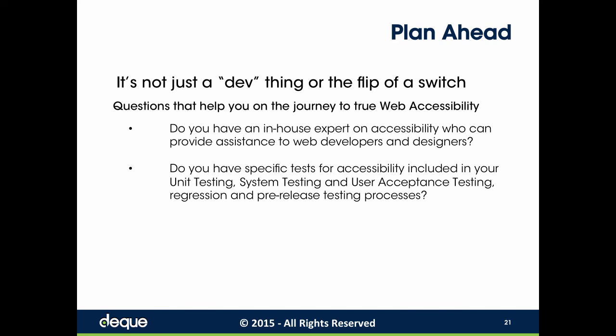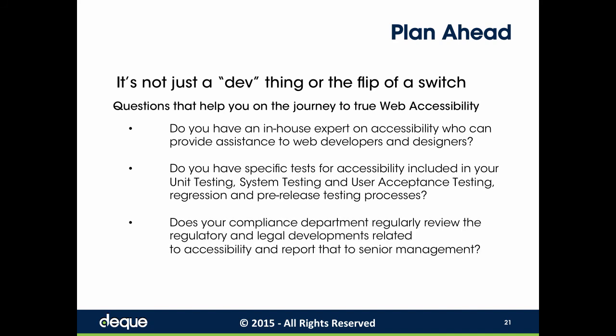Do you have specific tests for accessibility included in your unit testing, system testing, or user acceptance testing? How about regression and pre-release testing processes? All of that is important because we're testing for other types of users — otherwise able-bodied — and these other users are being left out. Does your compliance department regularly review the regulatory and legal developments related to web accessibility and report that to senior management so it becomes part of a program overall?